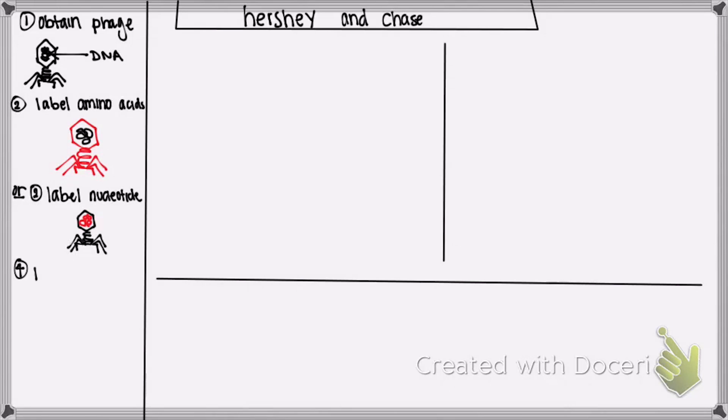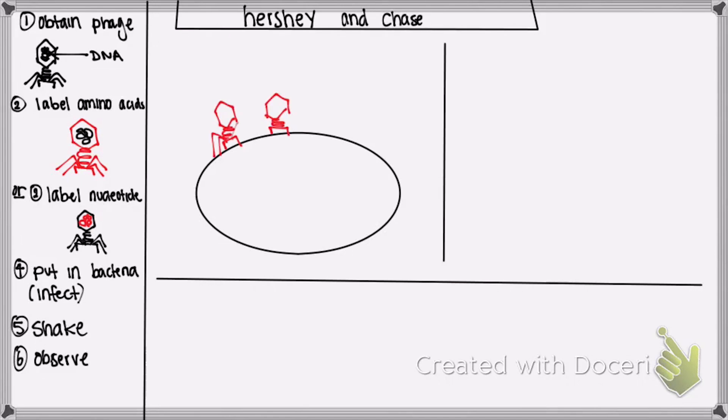Next, they're going to put it into, it says put in bacteria, but what it should mean is put it into a cell, or infect a cell, and then they're going to shake it, and then observe the results. So, let me draw a cell, and then draw some phages attached to the cell.